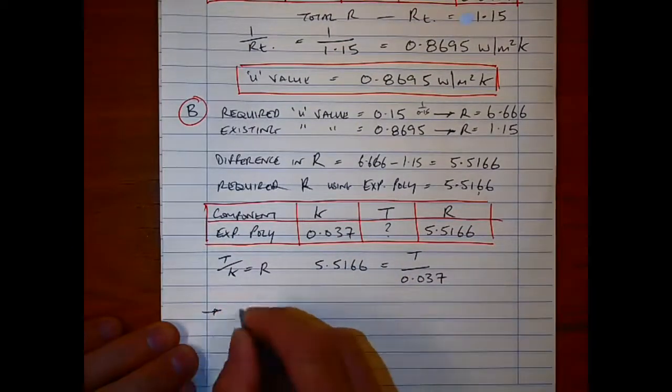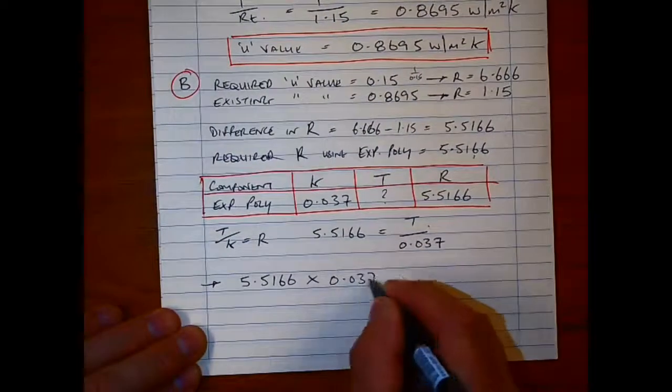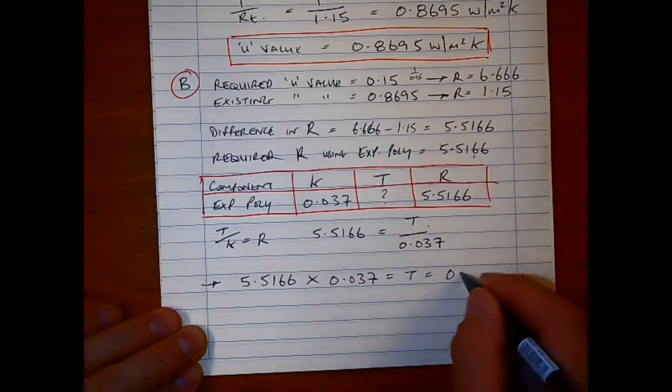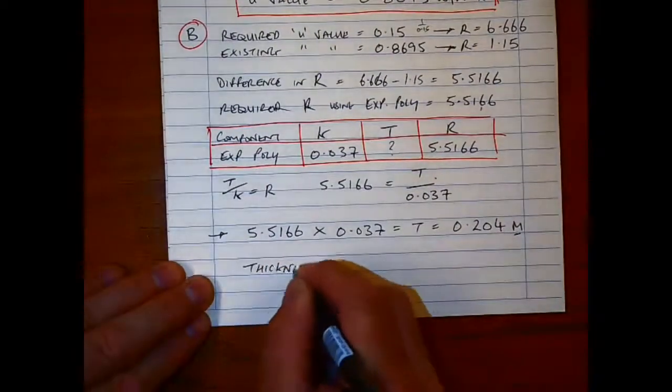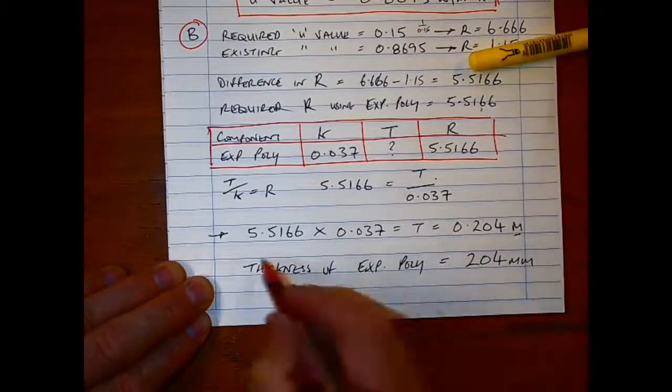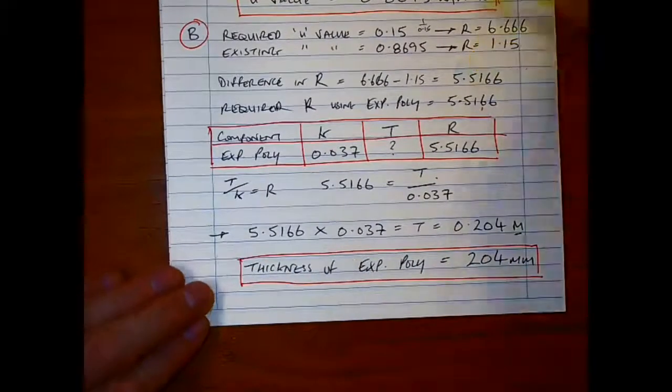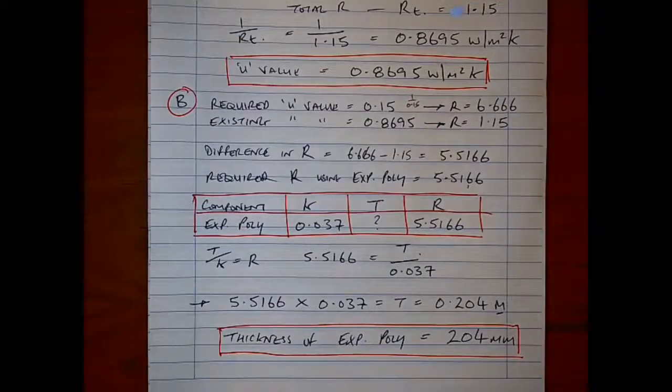We just don't know the thickness, so we go back to the formula with the thickness and the conductivity. You can see I'm writing it out here. All I do is divide one side—I take it over to the other side—so I have to multiply it. I multiply the resistance by the conductivity, which will give me my thickness. It's in meters, so I change it to millimeters. So it's 204 millimeters, as simple as that.